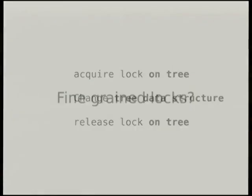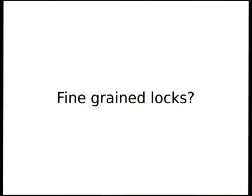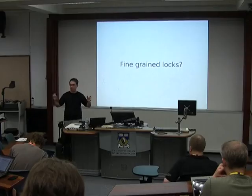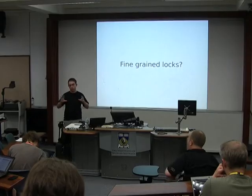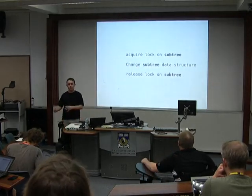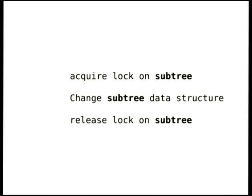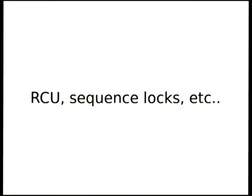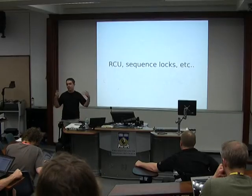Say you've got something bigger, like a big tree data structure. Acquiring a lock on that data structure is obviously not going to work well if lots of people are hammering on that tree in different parts. So what you might decide to do is something like fine-grained locks. If you're editing this part of the tree and I'm editing this part, we can work at the same time. You acquire a lock on a subtree, change it, then release the lock. This kind of works okay except you have to statically partition it when writing your program. There are also other mechanisms: Paul's RCU, sequence locks, reader-writer locks, and a whole bunch of other stuff.